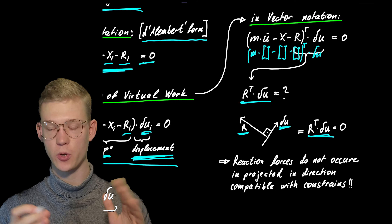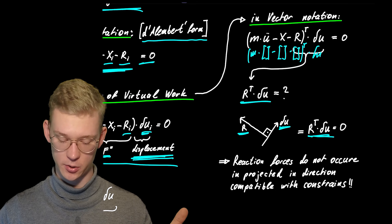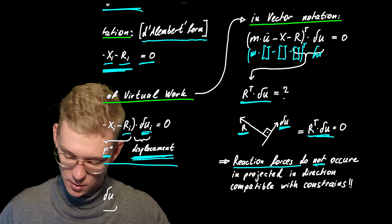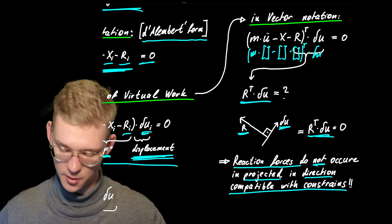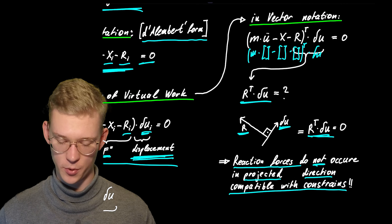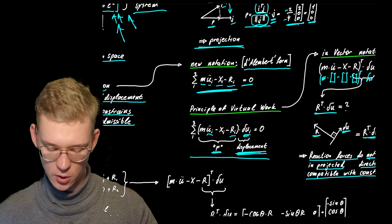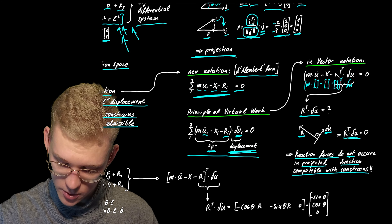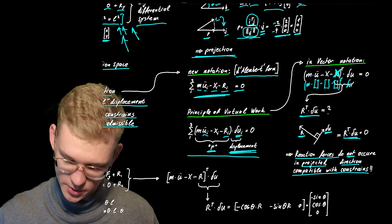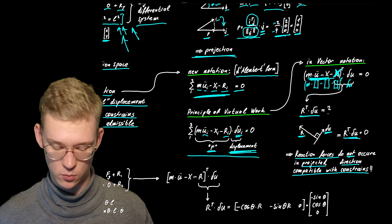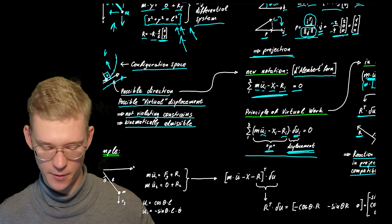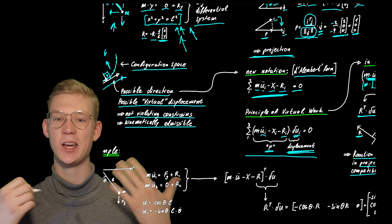To understand the principle of virtual work or the analytical approach, we will first look at an example. Here we have a simple point mass pendulum. We have mass m, length l, and angle theta. We know all the forces acting on our system. The acceleration of mass m in direction x: m times x double dot equals the force of gravity plus some reaction force that is keeping the point mass on its track. So we have gravity in this direction and reaction force x in this direction.